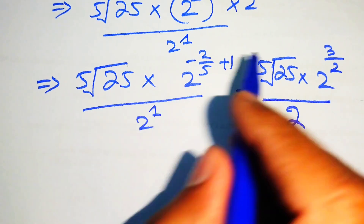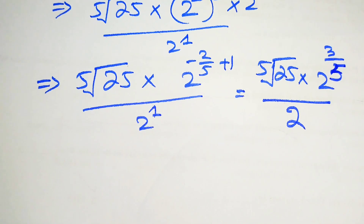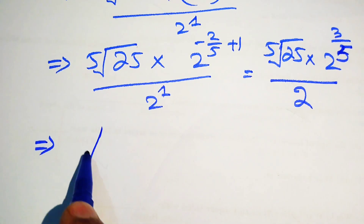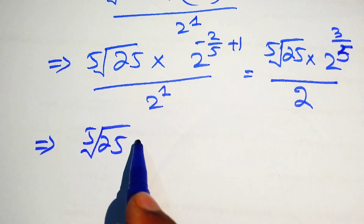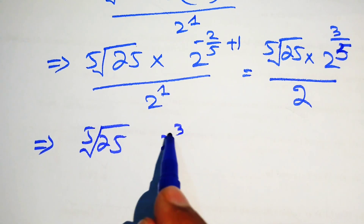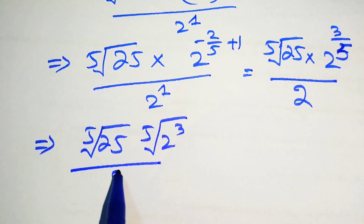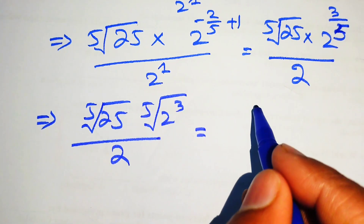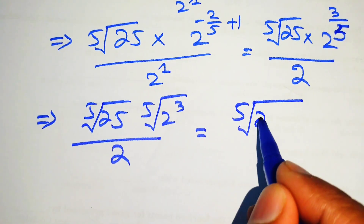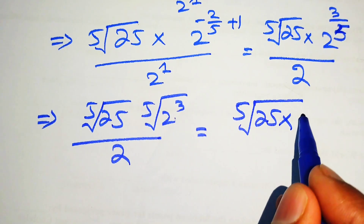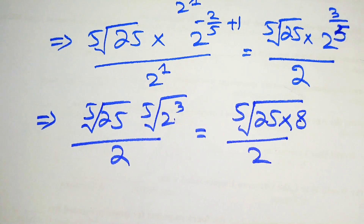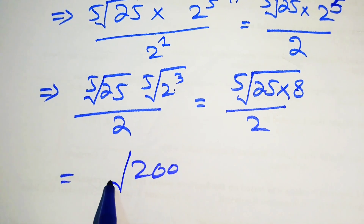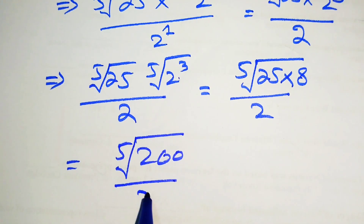We move the 3 inside the term, giving the 5th root of 25 times the 5th root of 2 cubed, divided by 2. Since both have the 5th root, we combine them: the 5th root of (25 times 2 to the power of 3). Since 2 cubed is 8, this is the 5th root of (25 times 8), which is the 5th root of 200, divided by 2. So our final answer is the 5th root of 200 divided by 2.